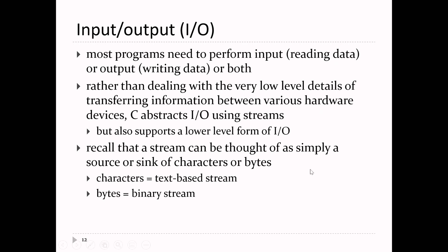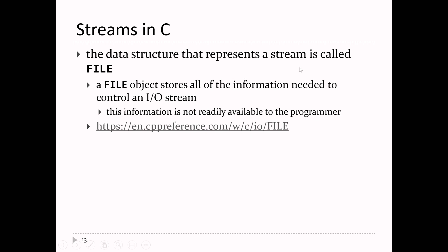A stream of data can be thought of as simply a source or sink of characters or bytes — characters would be a text-based stream. The file data structure that represents a stream of information in C is called FILE (capital F-I-L-E). It's actually defined as a struct, and it stores all of the information needed to control an I/O stream. You don't typically need to access this information, and in fact it's not easy to get to — you'd have to look at how the compiler writers implemented the FILE data structure.